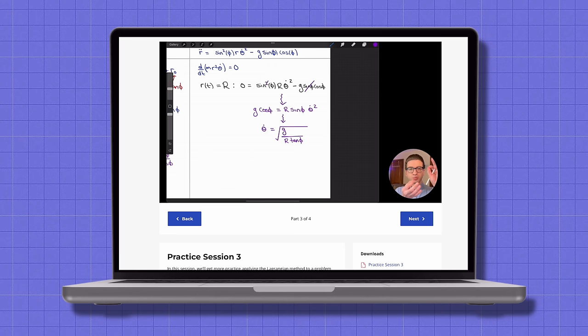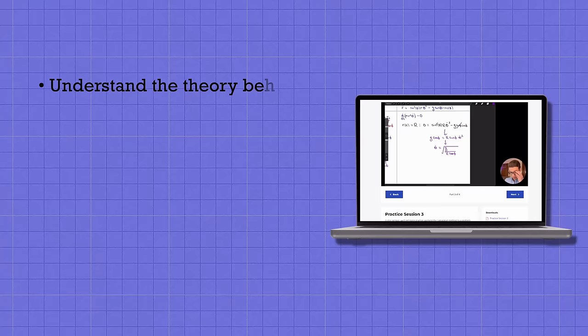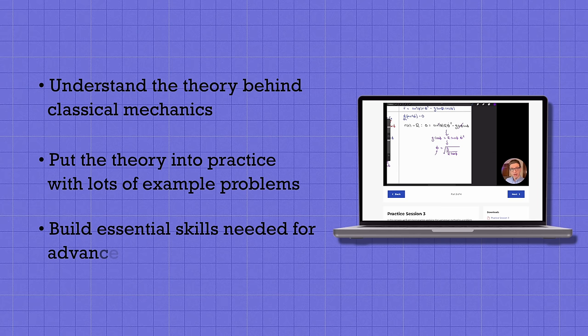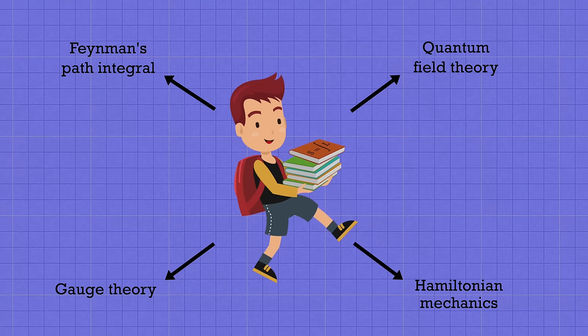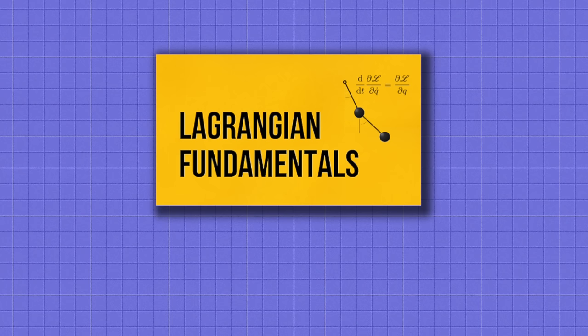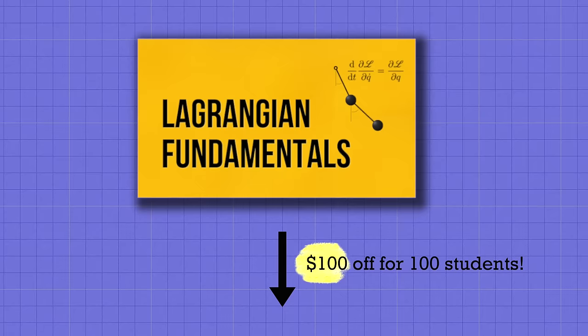Lagrangian mechanics is an essential subject for anyone who's serious about learning physics. And you'll come away from the course with a much deeper understanding of classical mechanics and the preparation to take on more advanced subjects afterwards, like the path integral approach to quantum mechanics or field theory or a dozen other topics in physics that rely on the Lagrangian method. Right now, the first 100 students to enroll in the course using the discount code I pinned in the comments can save $100 off the regular price. So sign up now if you want to take advantage of that and start learning a better way of thinking about classical mechanics.